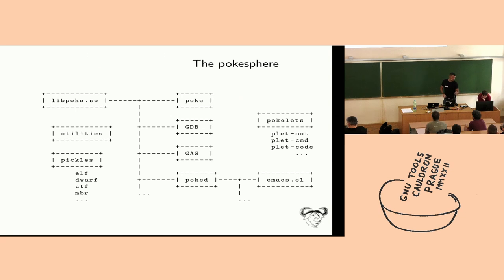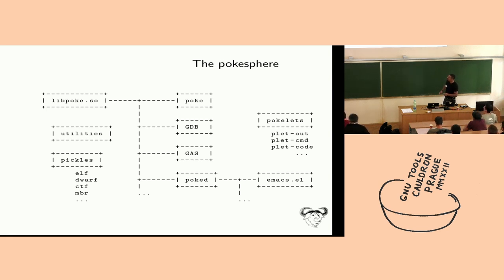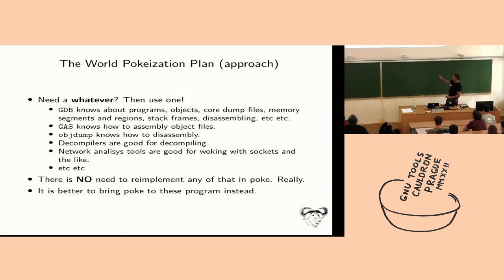The ecosystem includes GDB, GAS (which is currently vaporware but will happen), the poke daemon, and user interfaces like the Emacs mode and a graphical UI. These all link with libpoke. This is the poke sphere — it's growing out of control. So what is the plan and approach?